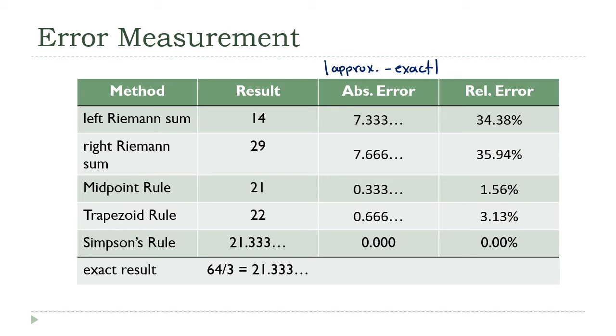The relative error is just the absolute error turned into a percentage. So it's going to be the absolute value of the approximate value minus the exact value divided by the exact value. Everything is always relative to that official exact quantity.